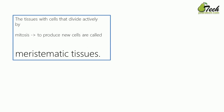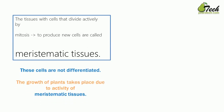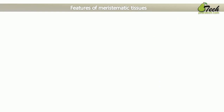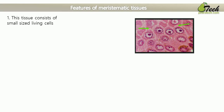Meristematic tissues are in charge of the growth of plants. This is the tissue with cells that divide actively by mitosis to produce new cells. This is the place where new cells are produced, so the growth of the plant takes place due to the activity of meristematic tissues.